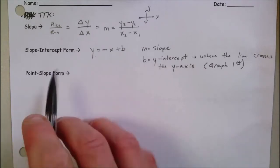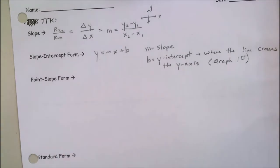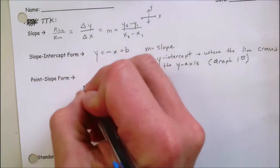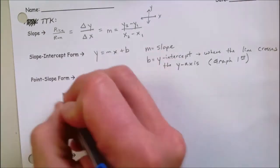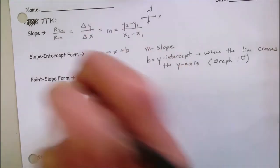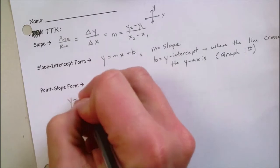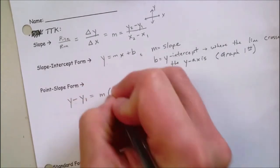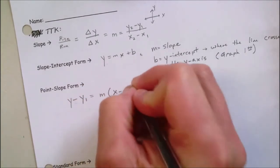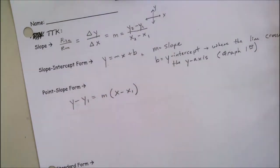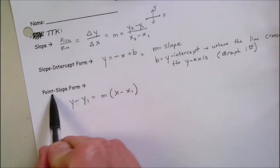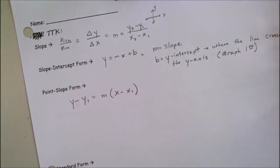Now, the point-slope form — I don't think you've probably used it before; I'm introducing it here. You will use it in Algebra 2, guaranteed. Here's the equation: y minus y-sub-1 equals m times the quantity x minus x-sub-1. When you have a point and a slope, you can use the point-slope form, and it's pretty simple.